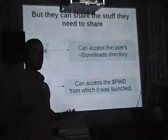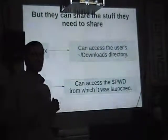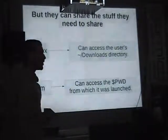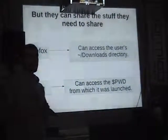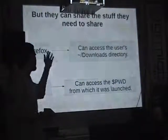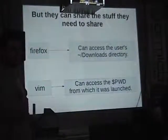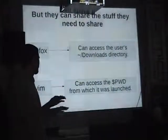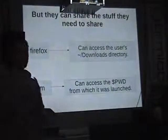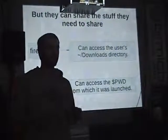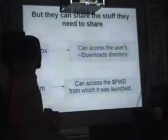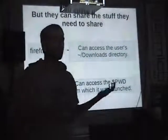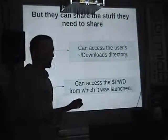Of course, you don't want your programs to be completely isolated from each other — they need to work with files they need. For example, Firefox — you want to be able to download things and sometimes upload them as well. So we give Firefox access to the downloads directory in your normal home directory. And with Vim, I give Vim access to my current working directory, but I don't give it access to my whole home directory because it doesn't need it.